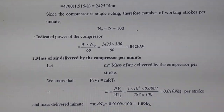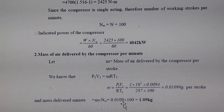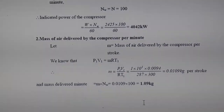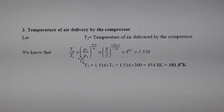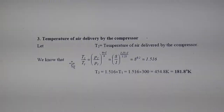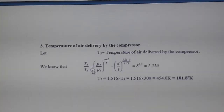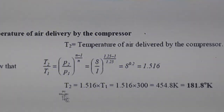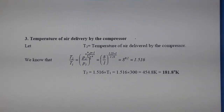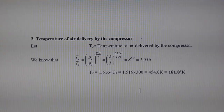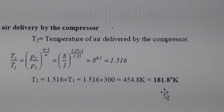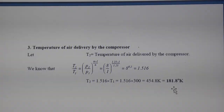Since speed is given, the mass per minute = 0.0109 × 100 = 1.09 kg/min. For the temperature of delivered air, we use the relation T2/T1 = (p2/p1)^((n−1)/n). Substituting known values of T1, p2, p1, and n, we get T2 = 181.8 K (though this appears low — likely 481.8 K in context). This completes the second numerical.